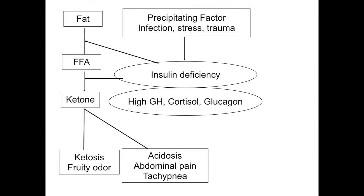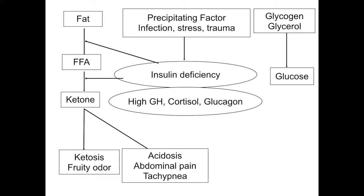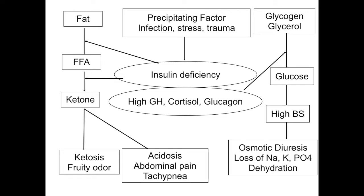Acidosis causes abdominal pain and classical acidotic breathing. Counter-regulatory excess causes glycogenolysis and gluconeogenesis, increasing blood glucose significantly, leading to osmotic diuresis and significant depletion of sodium, potassium, and phosphorus along with dehydration. DKA is a composite of both insulin deficiency and counter-regulatory excess, and this must be kept in mind for management.